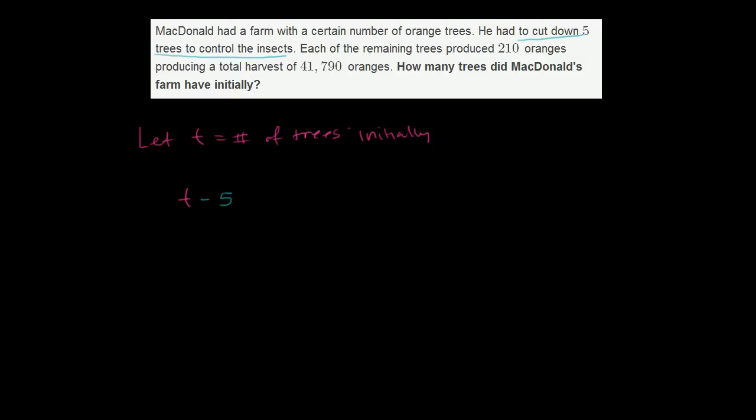Now, they tell us that each of the remaining trees, and we know there are t minus five remaining trees, produced 210 oranges. So each of these t minus five trees are going to produce 210 oranges. So this is the number of oranges the t minus five trees are going to produce. This is the number of trees times the oranges per tree.